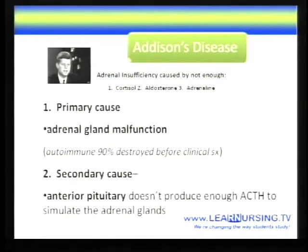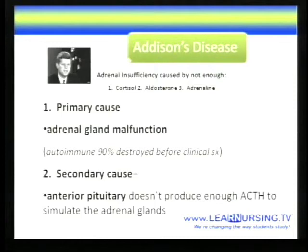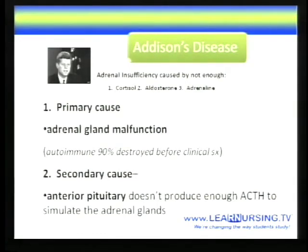The secondary cause would be that the anterior pituitary doesn't produce enough ACTH. Even if the hypothalamus is doing its job and kicks out CRH, sending it to the anterior pituitary, if the anterior pituitary doesn't do its job and send the ACTH to the cortex, it stops right there. That's not the most common cause, but it makes sense once you remember.